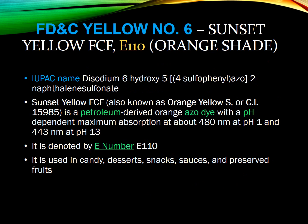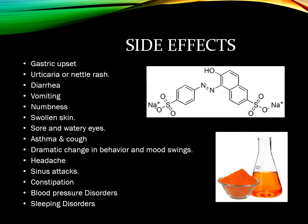FD&C Yellow No. 6, Sunset Yellow, has the E number E110 and gives an orange shade. It is a petroleum-derived artificial colorant categorized under azo dyes. Maximum color absorbance is at 480 nm at pH 1 and 443 nm at pH 13. It is used in candies, desserts, snacks, sauces, and preserved fruits. Side effects include gastric upset, diarrhea, vomiting, asthma and cough, headache, and sinus irritation.